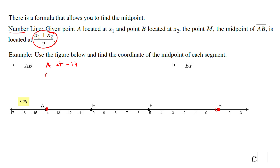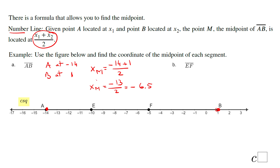Point B is located at 1. So the x-coordinate of the midpoint — I'll call it x sub M — is negative 14 plus 1, divided by 2. That gives us negative 13 over 2, which in decimal form is negative 6.5. Looking at the picture, that makes sense — that is the coordinate of point M, the midpoint of segment AB.